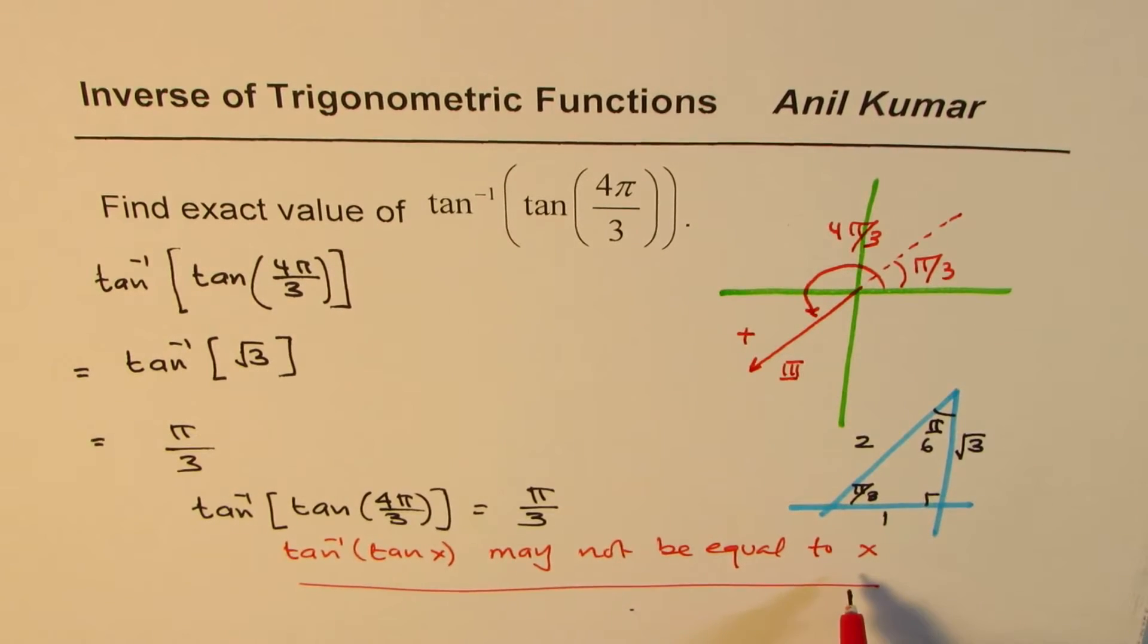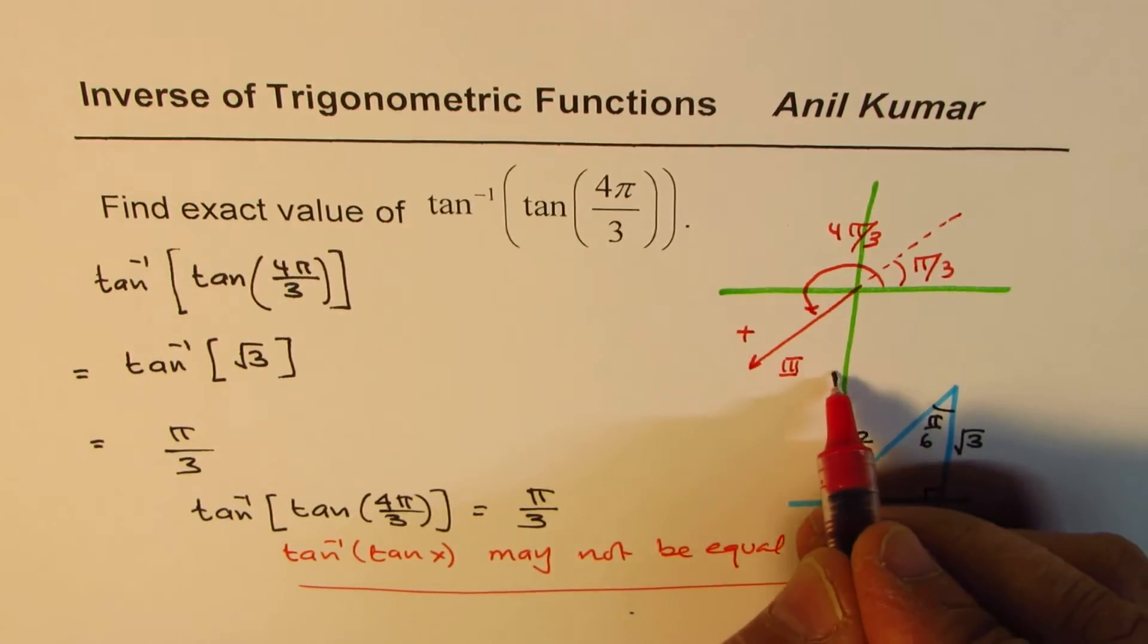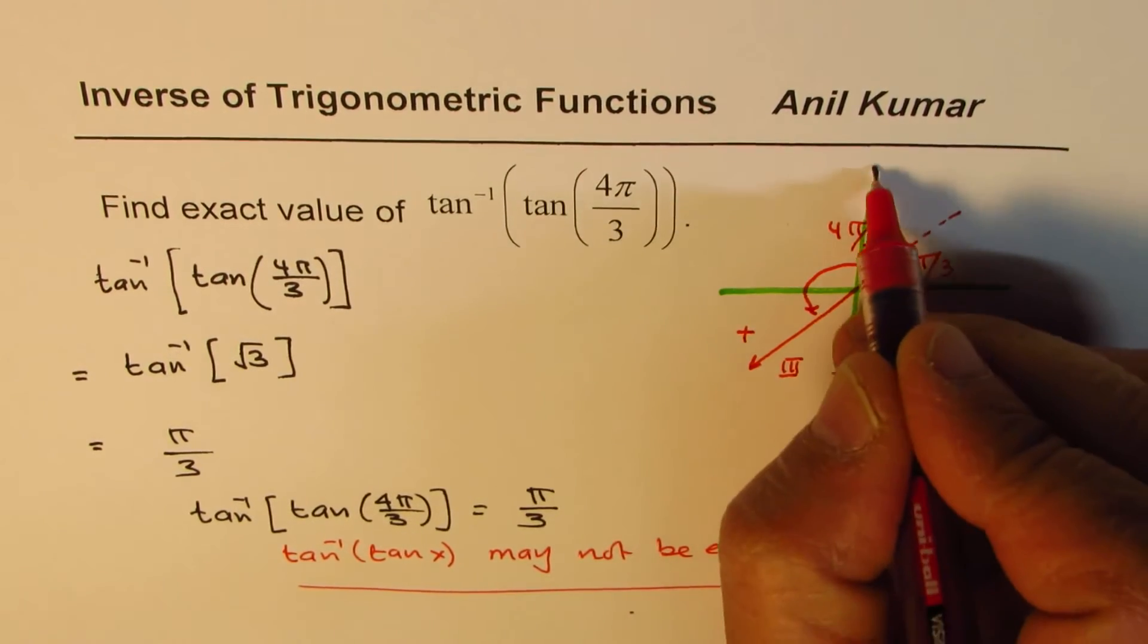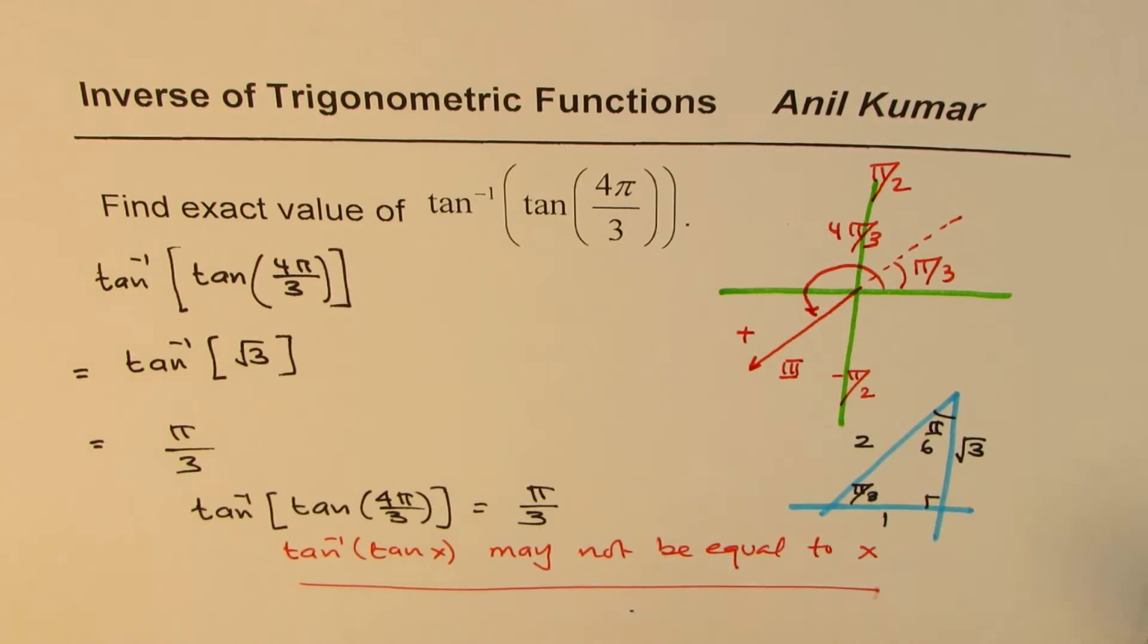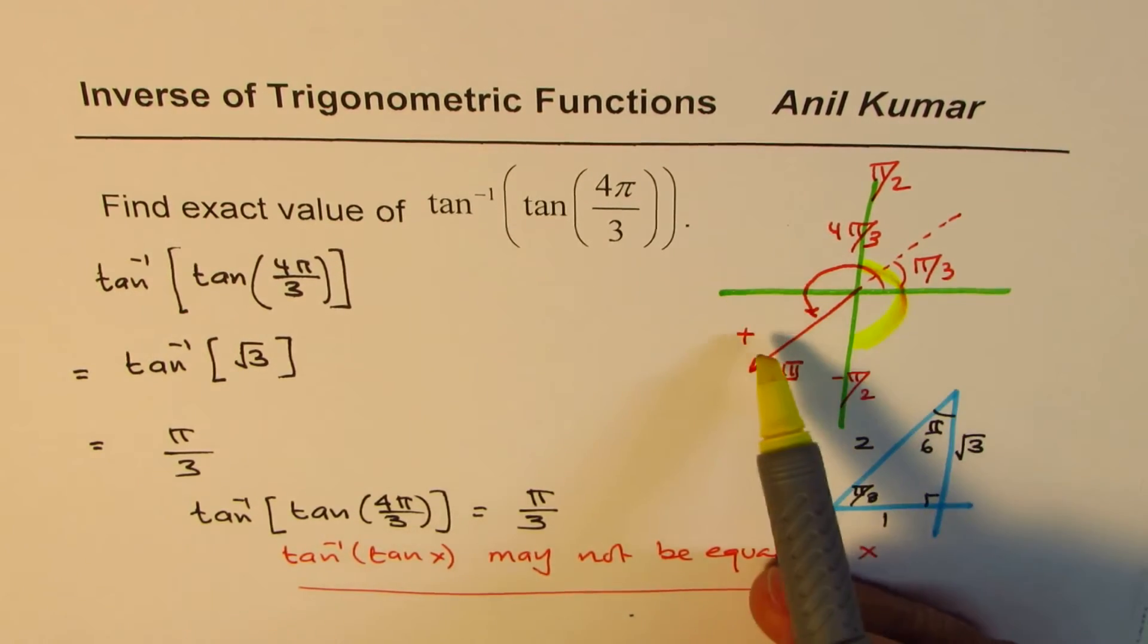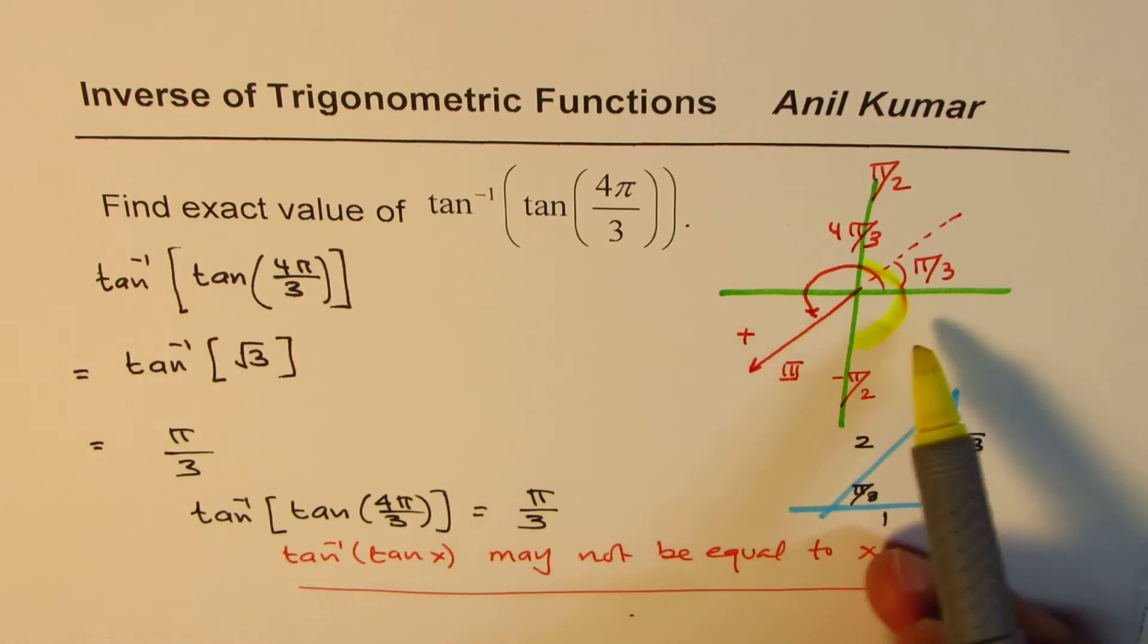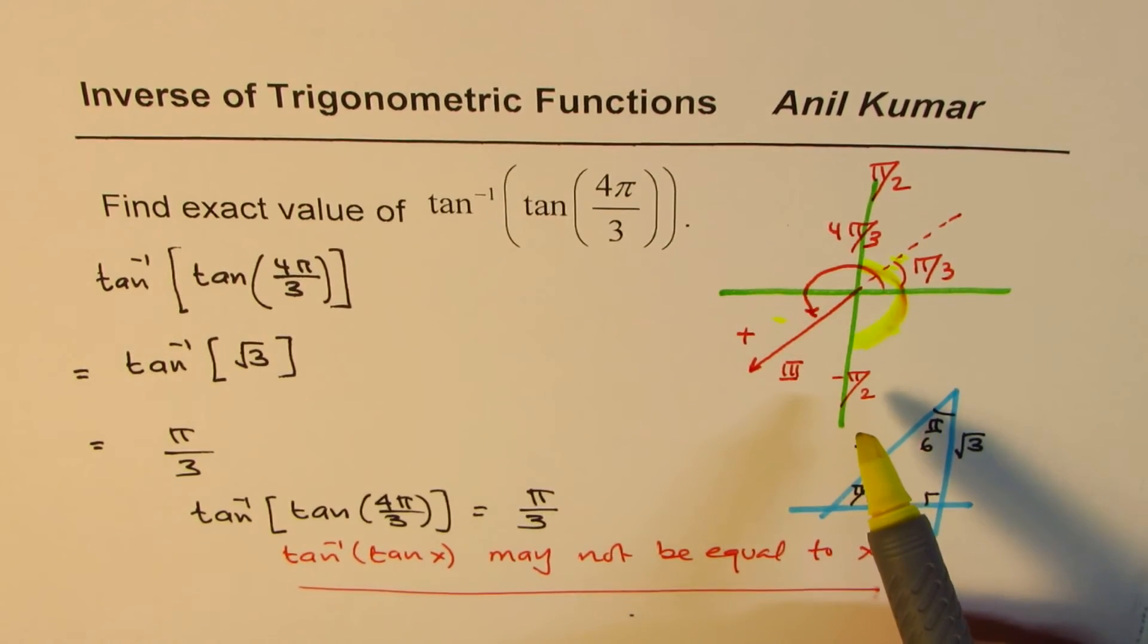The reason is that the inverse function is defined in the interval minus π by 2 to π by 2. Now since tan inverse is defined only in this interval, if we have an angle which is outside we are going to get result only in this interval. So we will not get that result.